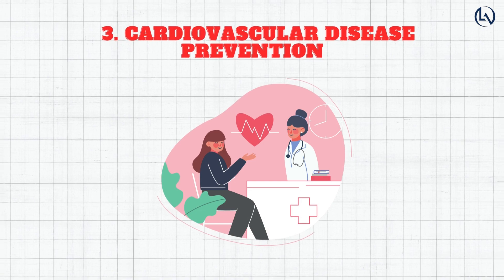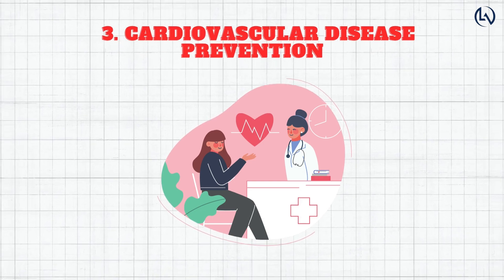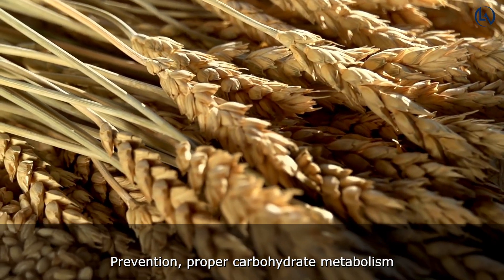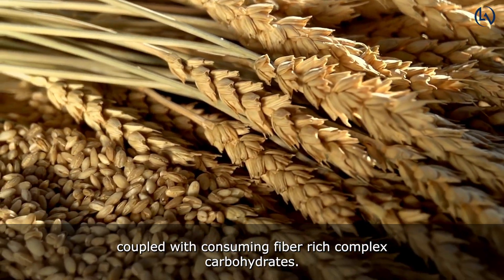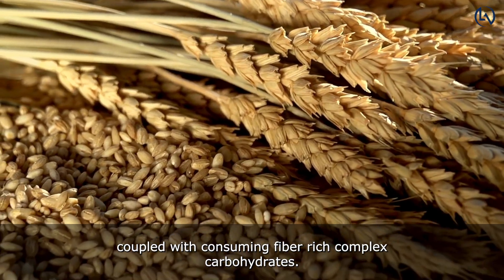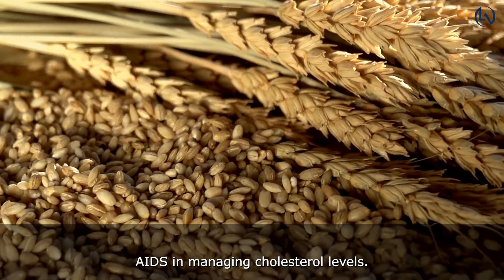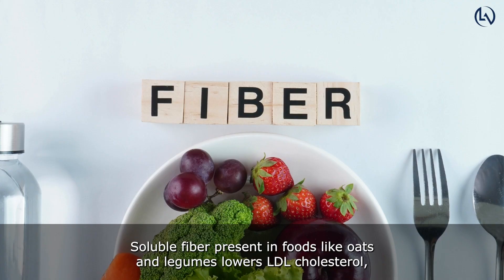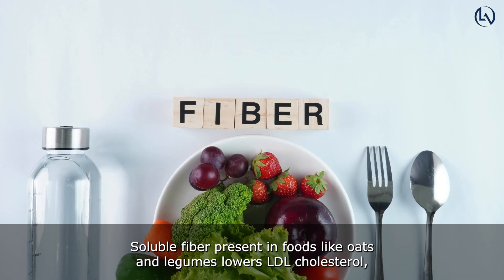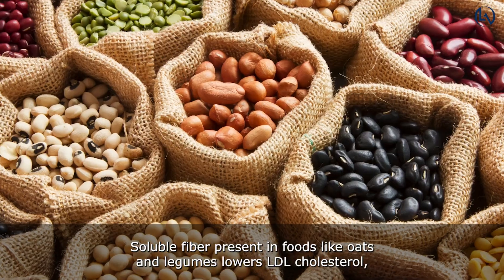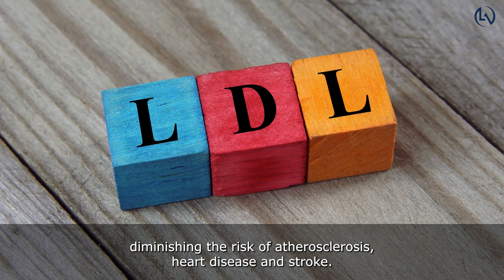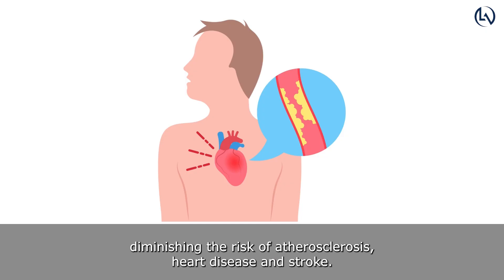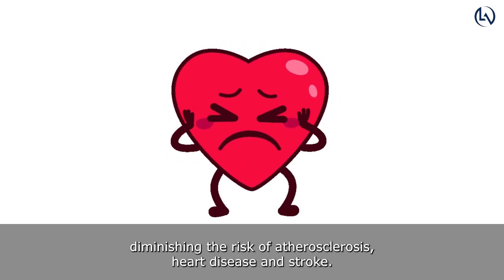Cardiovascular Disease Prevention: Proper carbohydrate metabolism, coupled with consuming fiber-rich complex carbohydrates, aids in managing cholesterol levels. Soluble fiber, present in foods like oats and legumes, lowers LDL cholesterol, diminishing the risk of atherosclerosis, heart disease, and stroke.